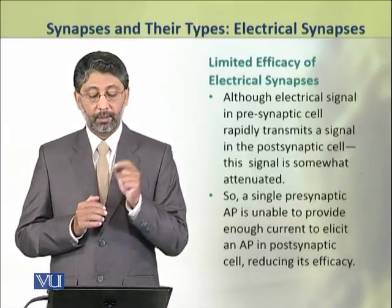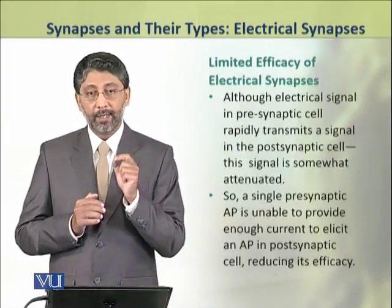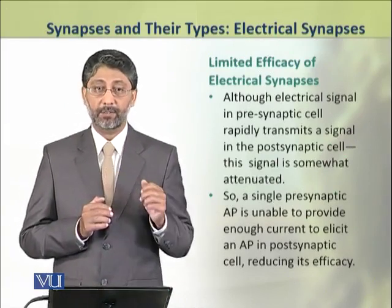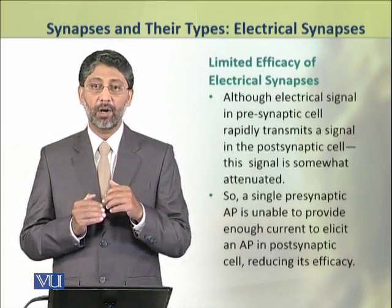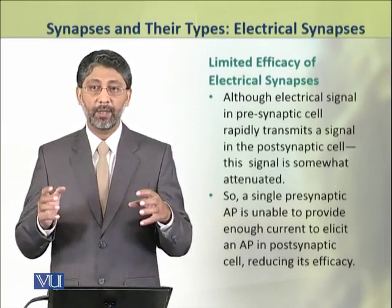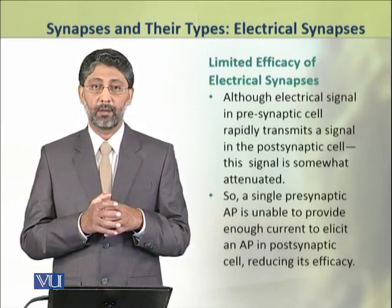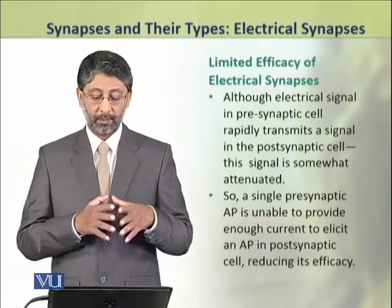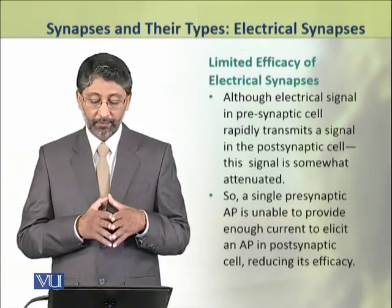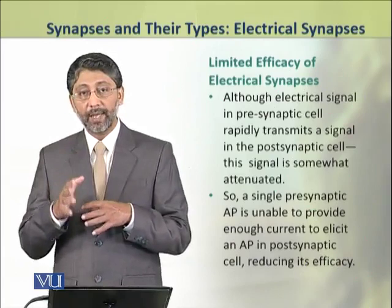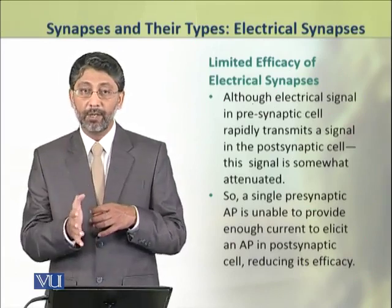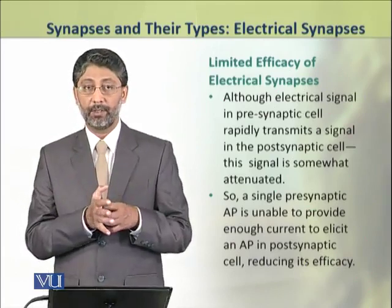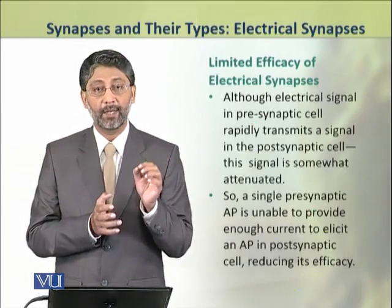Dear students, the electrical synapses provide a means of very rapid transmission without involving any chemical in between. However, it has limited efficacy because the signal that is transferred from one neuron to the other through the gap junction proteins is somewhat attenuated.